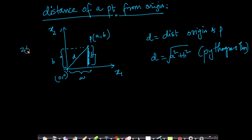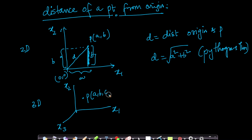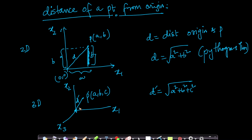That was in 2D. What about 3D? In 3D, I can make the same argument. Suppose I have axes x1, x2, and x3, and a point B with three components A, B, and C. By simply applying the Pythagorean theorem, I can show that the distance D′ of this point from the origin is the square root of A² + B² + C². You can prove this easily by applying Pythagoras multiple times.